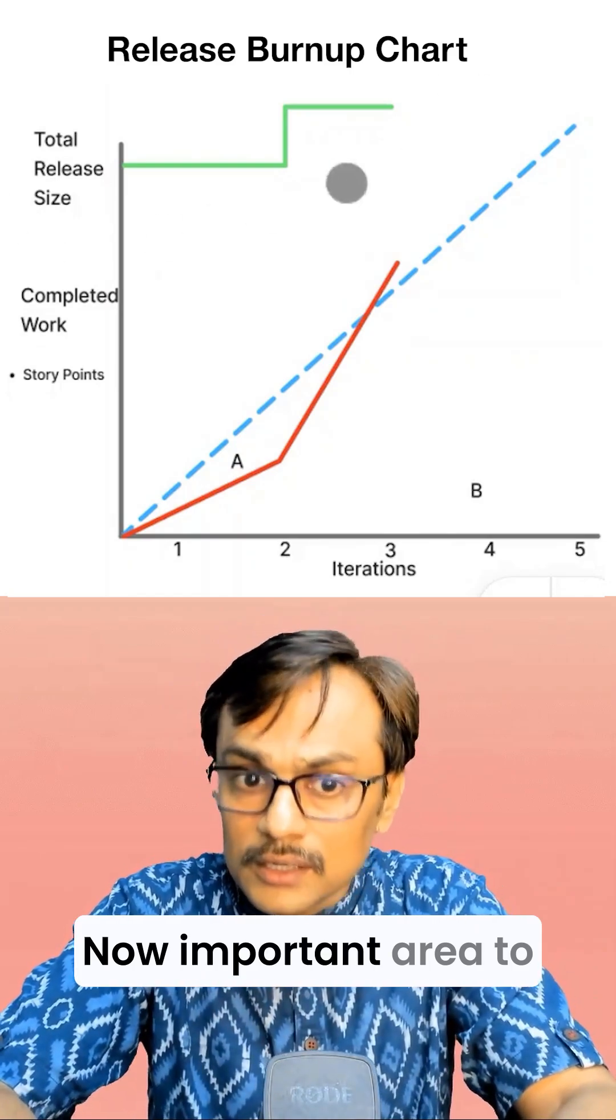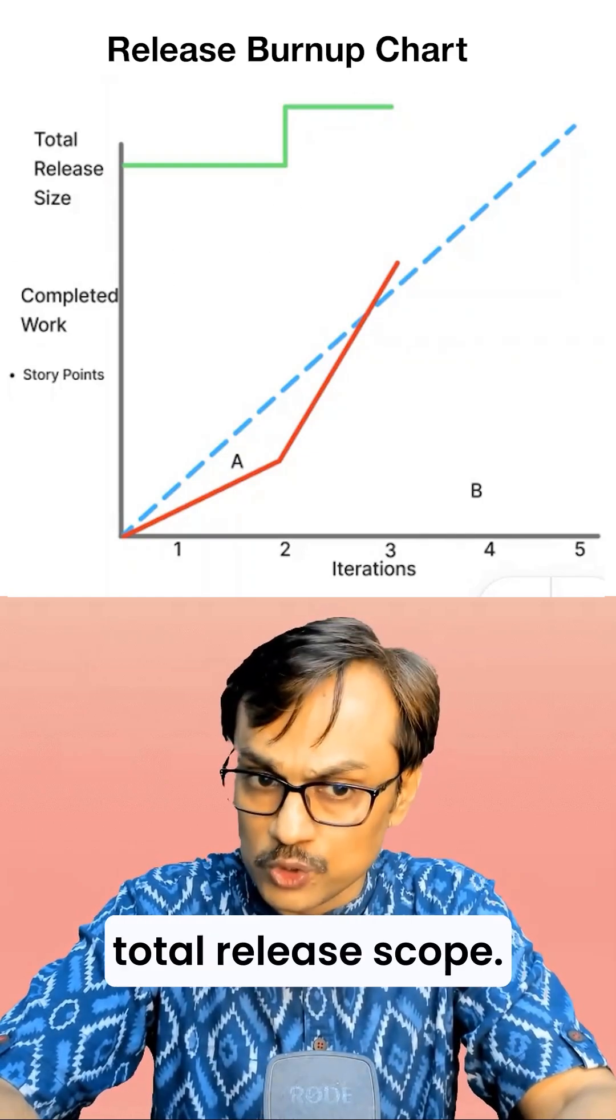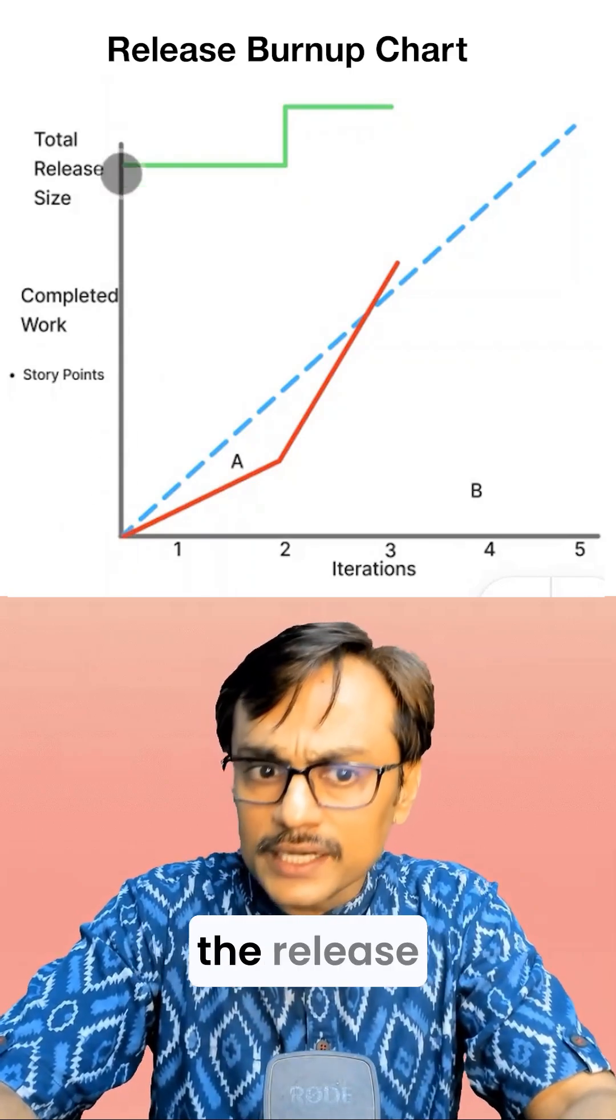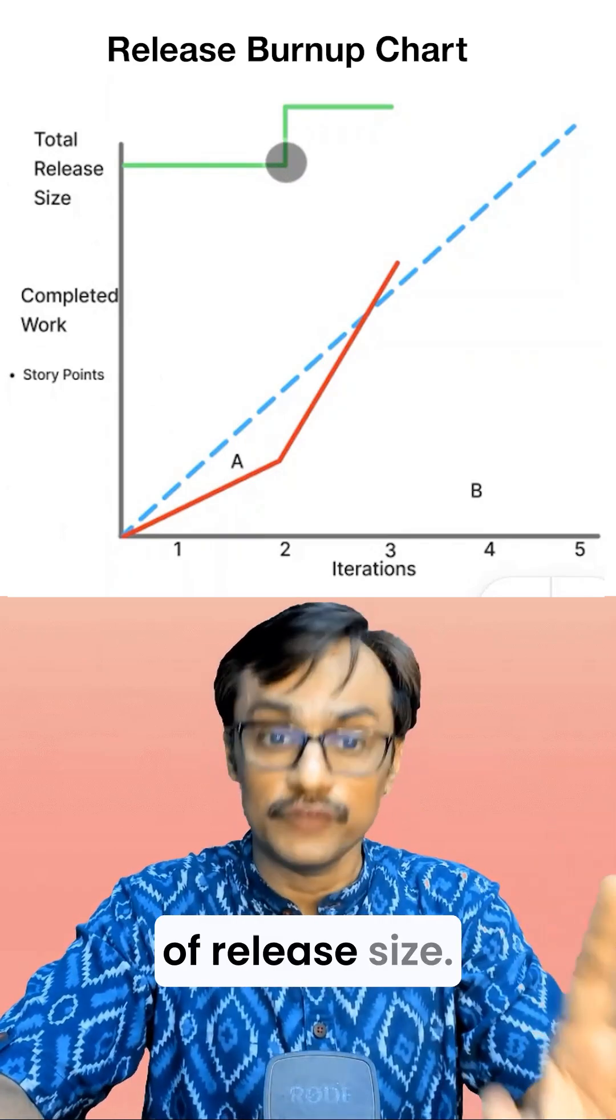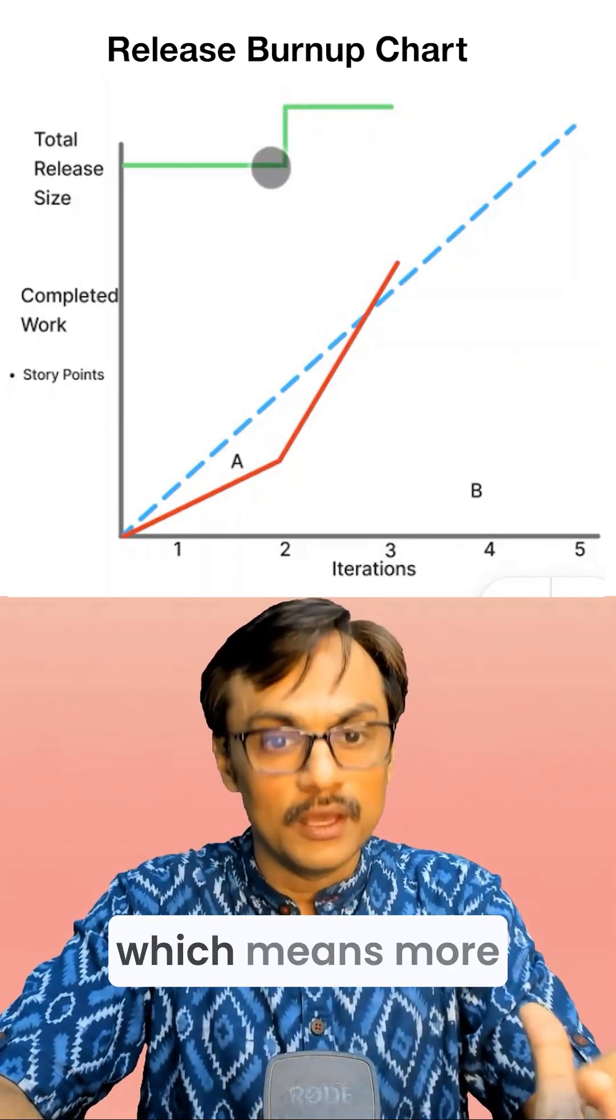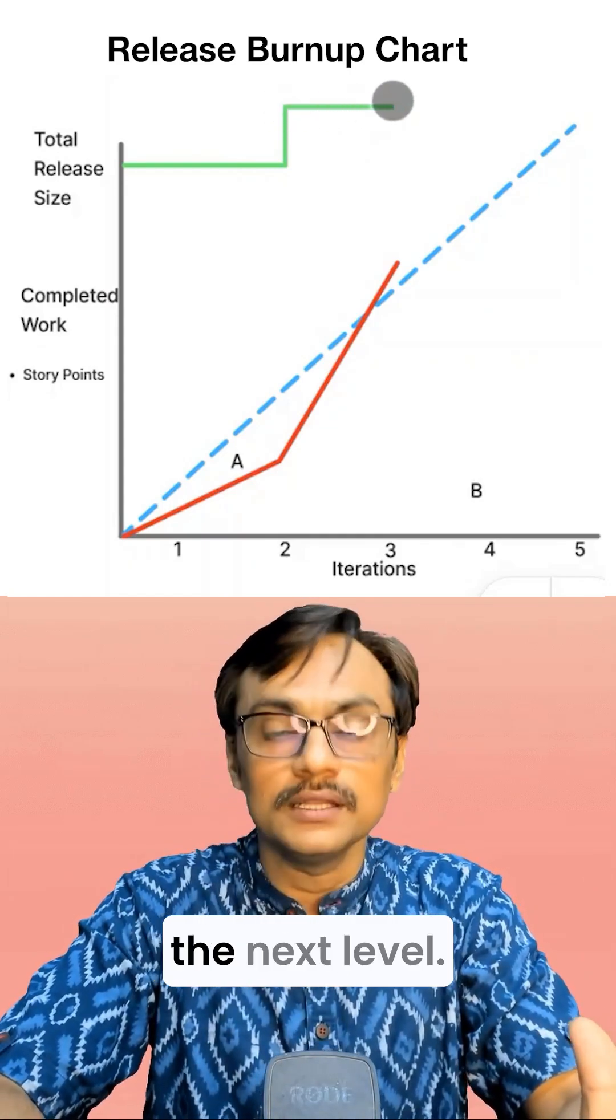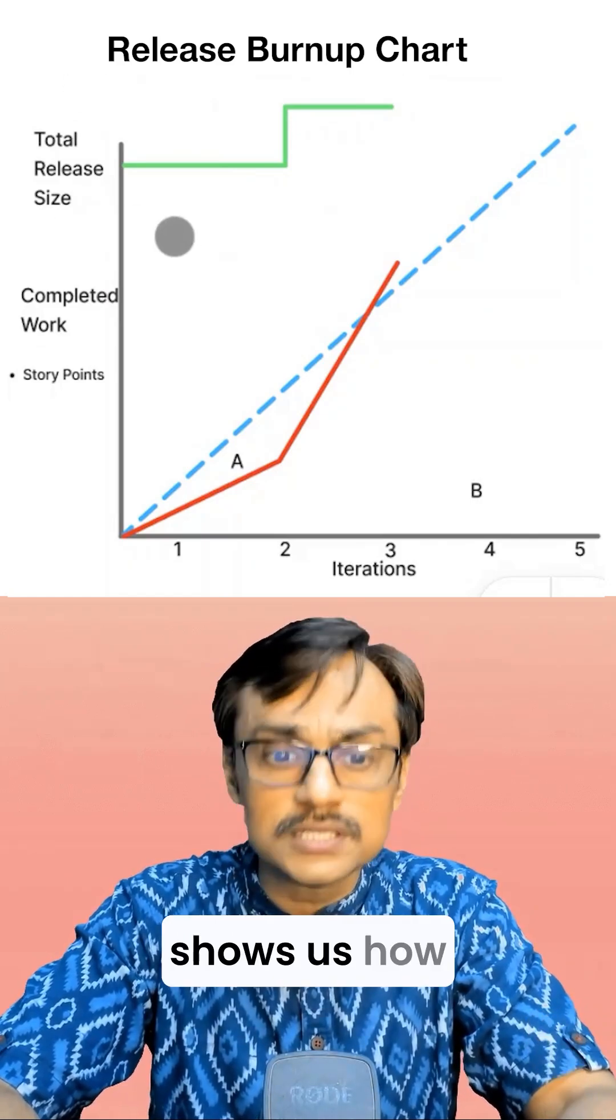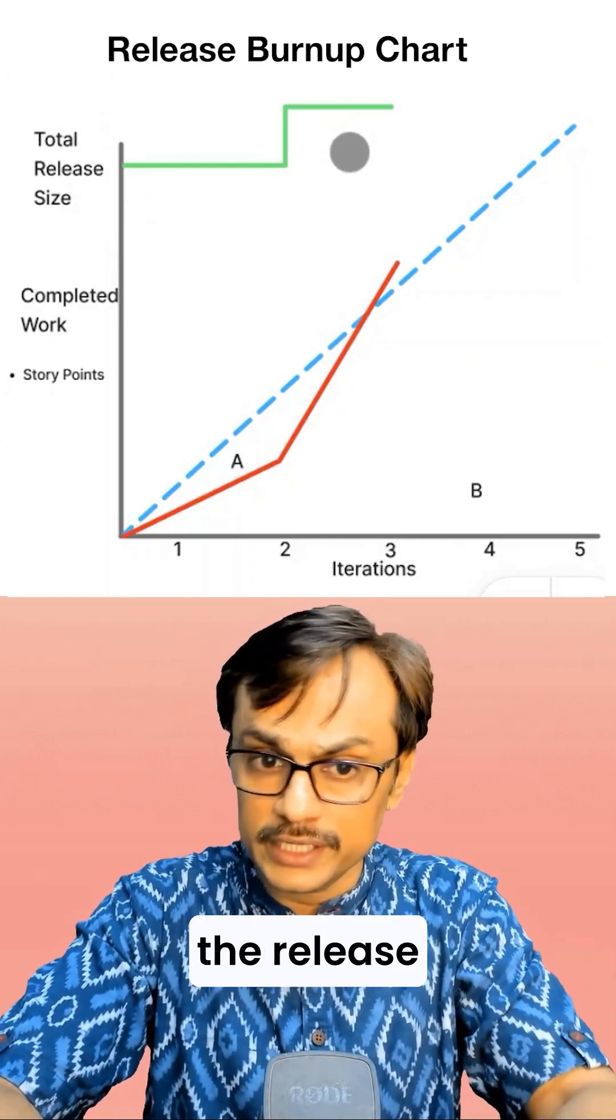Now important area to look at is the total release size or total release scope. In this particular graph what I am showing is when we started the release for first two iterations we had understanding of release size, but in the second iteration we have an addition of the scope which means more stories got added. The green line is showing the next level, so this information shows us how much work is totally needed in order to achieve the release objective.